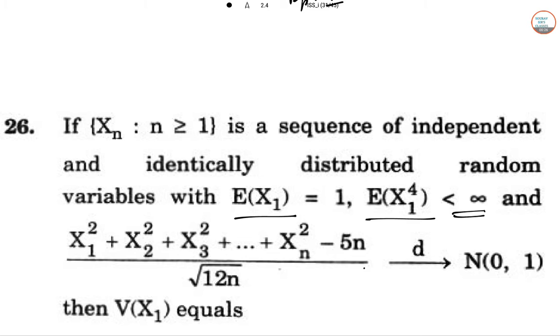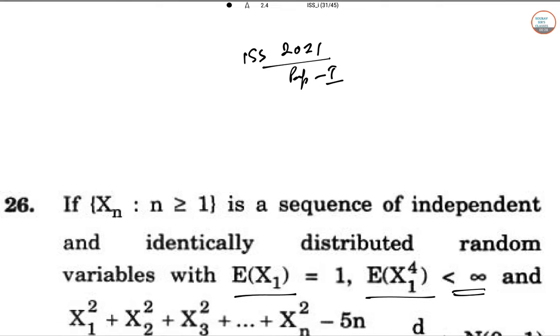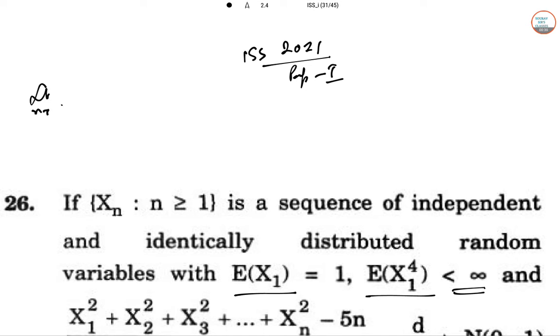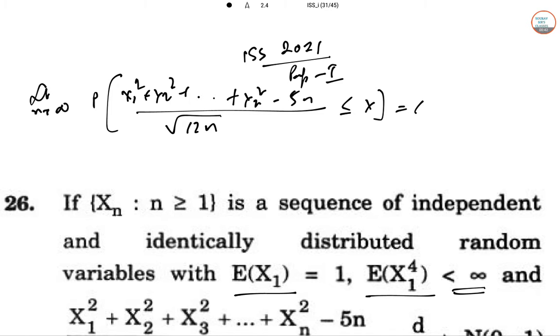Taking the limit as n tends to infinity, we have P((X_1^2 + X_2^2 + ... + X_n^2 - 5n) / √(12n) ≤ x) → Φ(x). Comparing by the Central Limit Theorem, we get that E(∑X_i^2) = 5n and V(∑X_i^2) = 12n.